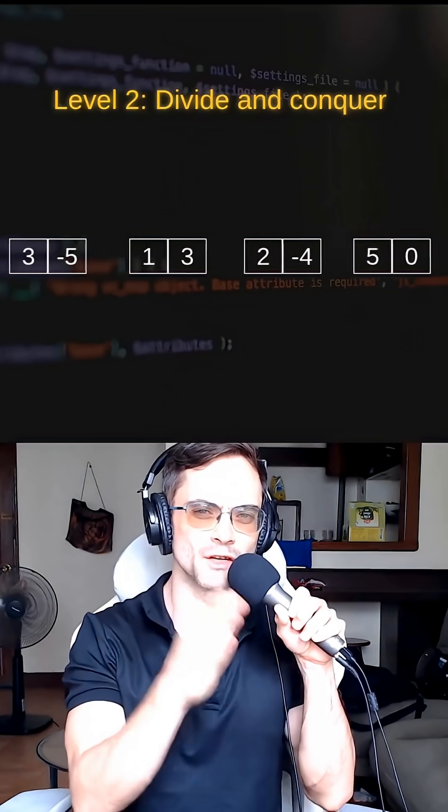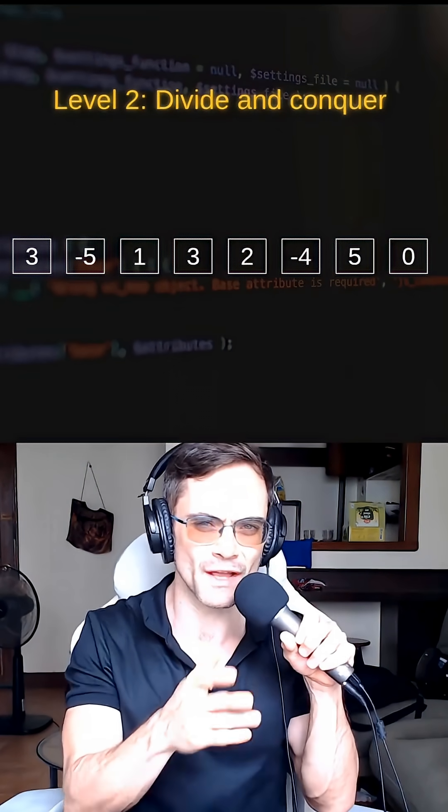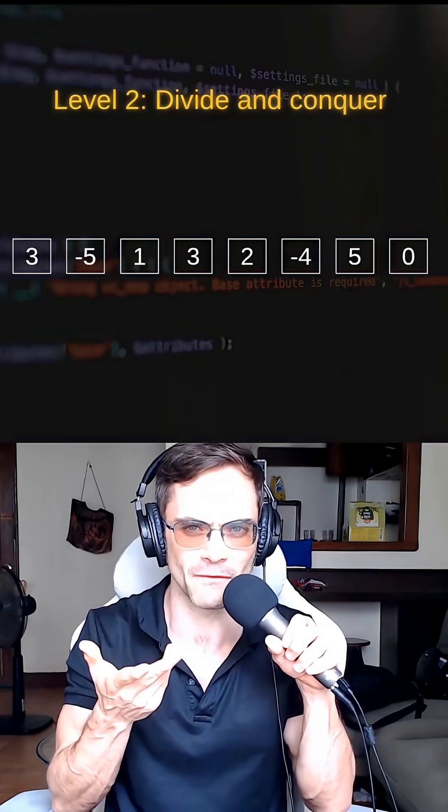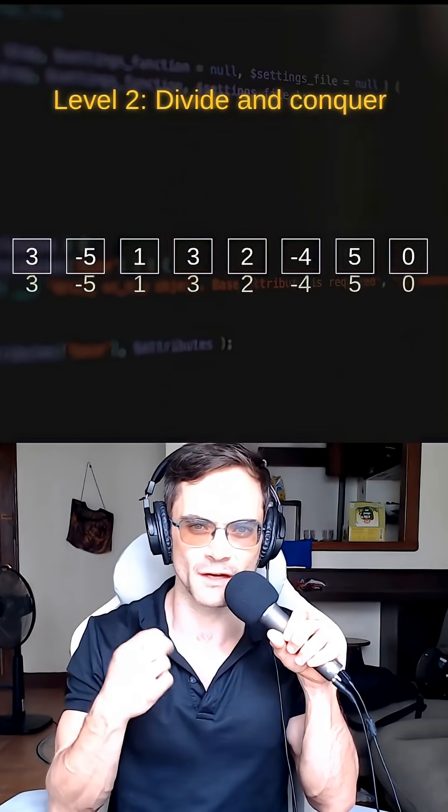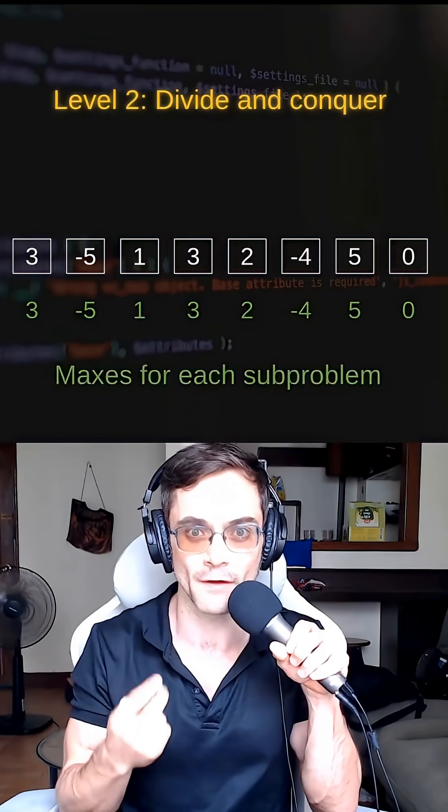So basically we just keep dividing until we get down to individual items. Then the max of a subarray consisting of just one item is of course just that item. So these single numbers are all maxes for smaller subproblems consisting of one item.